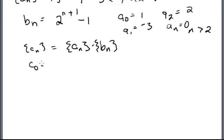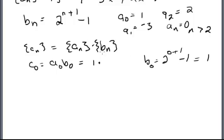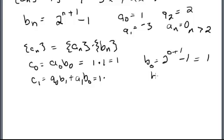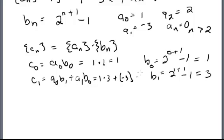c0 is equal to a0 times b0, and a0 is 1 times b0, which is 2 to the 0 plus 1 minus 1, equal to 1. So that's equal to 1 — so far so good. c1 is equal to a0 times b1 plus a1 times b0. a0 is 1, b1 equals 2 to the 1 plus 1 minus 1, which is 2 squared minus 1 equals 3. So that's 3 plus a1 is negative 3, and b0 is 1. So that equals 3 minus 3, which equals 0.